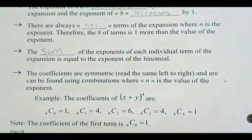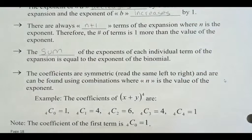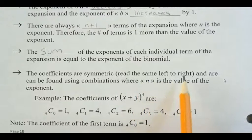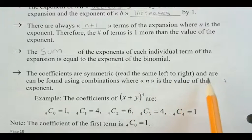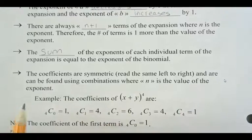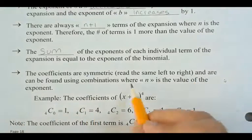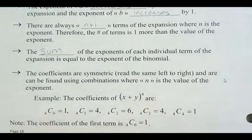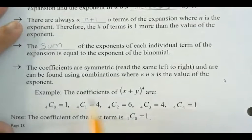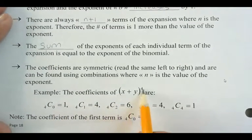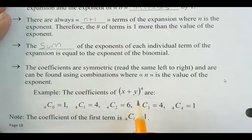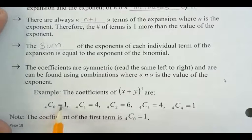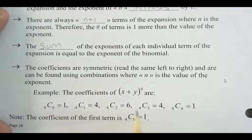All right, now, the coefficients are symmetric, which means that it reads the same from the left to the right. And can be found using the combinations where N is the value of the exponent. So, for example, if we look at the fourth one, the coefficients for x plus y to the power of four, those are going to be, in order, four choose zero equals one. The first coefficient on it is one. Four choose one is four. That's the coefficient on the second term.